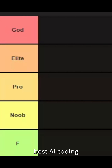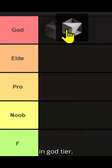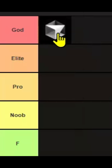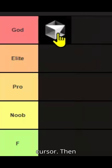This is the best AI coding IDE tier list for 2025. First we have Cursor. Cursor will go in God tier. It is the best AI IDE out there in terms of speed, code completion, model support. Everything is best in Cursor.